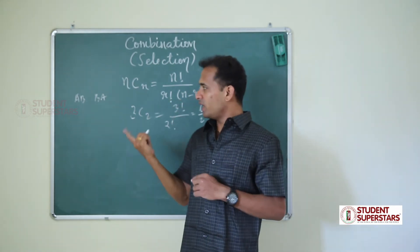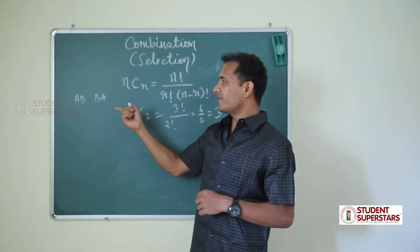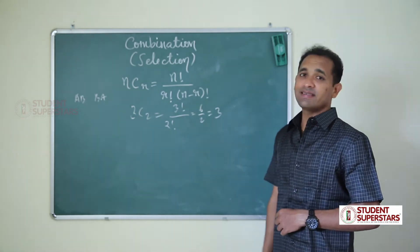But in permutation: A,B; B,A; B,C; C,B; A,C; and C,A. Got it? So they are 6, and here 3. So this is selection.